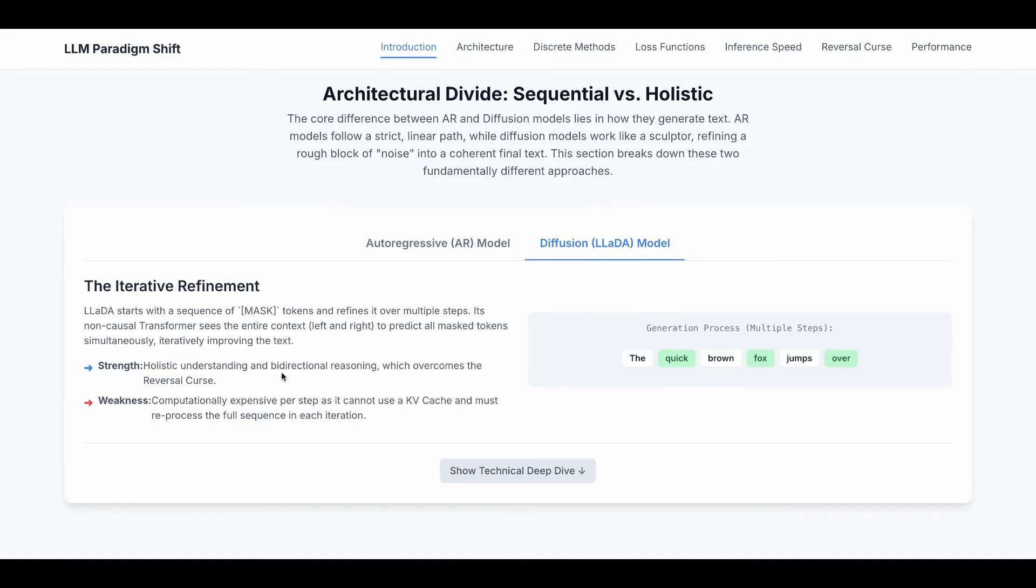Iteratively improving the whole sentence. So the strength is holistic understanding and bi-directional reasoning, which overcomes the reversal curse. However, the weakness is it's computationally expensive per step as it cannot use KV cache because KV cache depends on causal relationship and must reprocess the full sequence in each iteration.